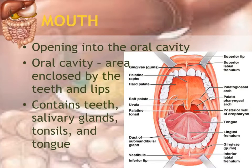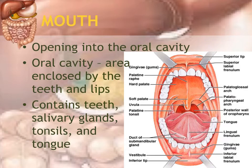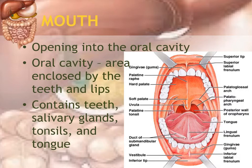The mouth is the opening into the oral cavity. The oral cavity is a space enclosed by the lips and teeth anteriorly, and behind the oral cavity is the oropharynx, which is part of the throat. The roof of the mouth is the palate and the floor is comprised of the muscle of the tongue. The oral cavity also contains accessory organs such as teeth, salivary glands, tonsils, and the tongue.